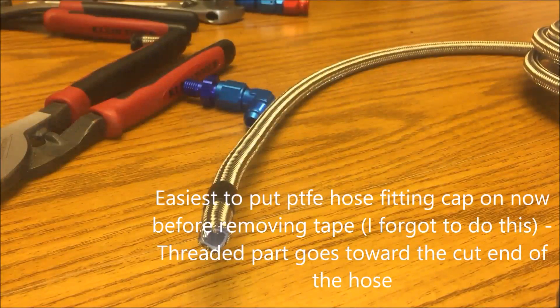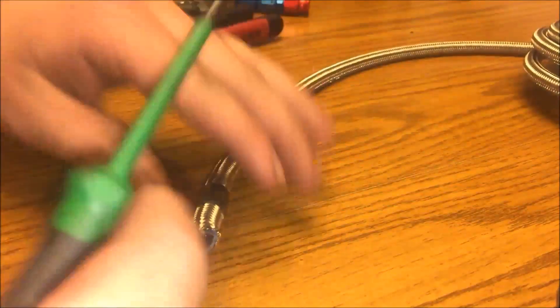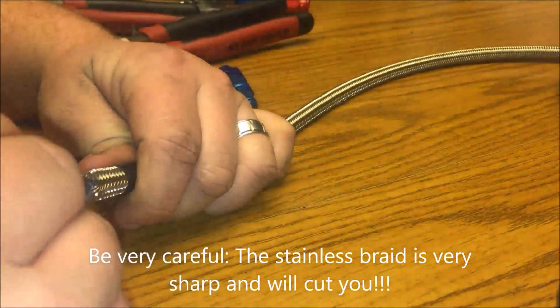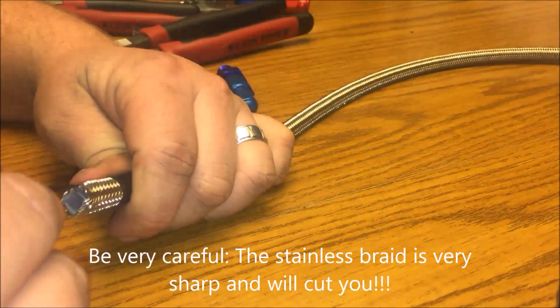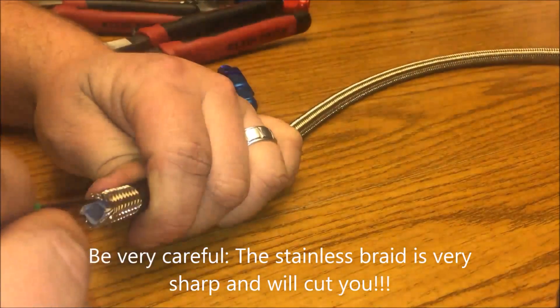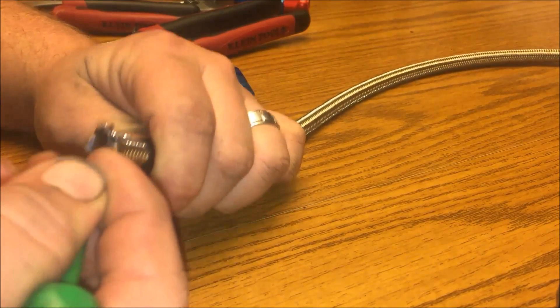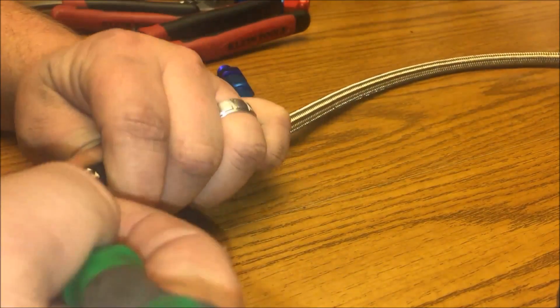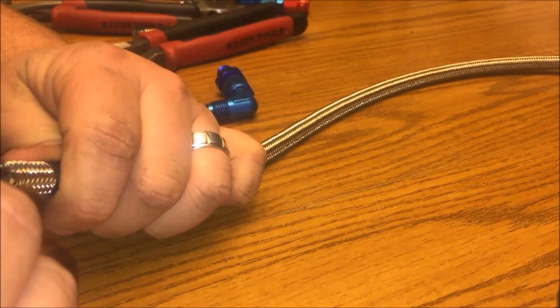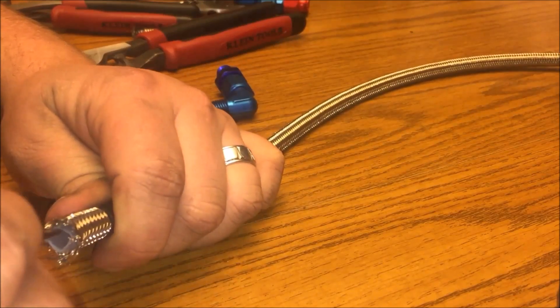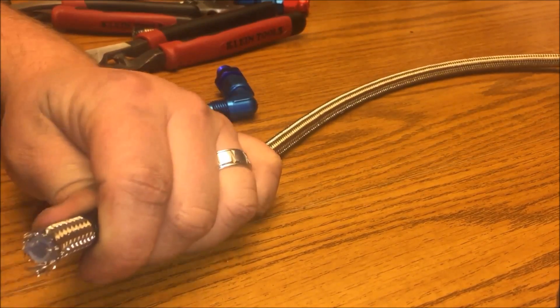Then what we're going to do is take a screwdriver and start to fray the stainless braid out. They do make specialty tools for this, but I don't see the point in spending money on specialty tools you can do with regular tools if you're not doing it every day.